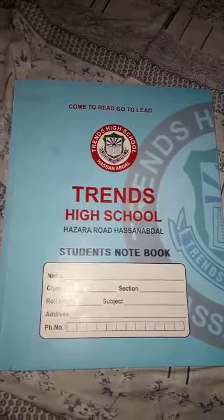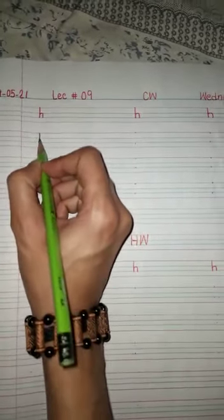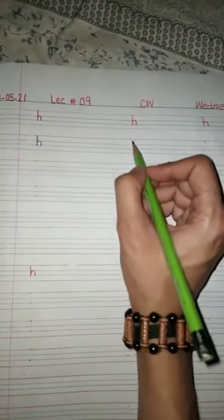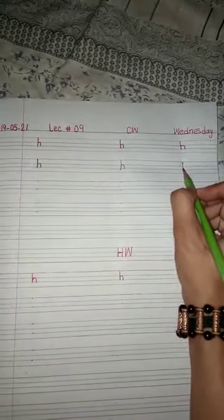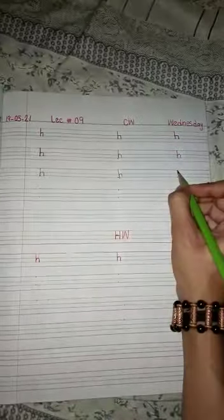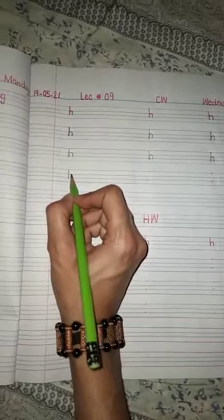Okay students, now open your English notebook. Aaj ki lecture mein hum H likhenge — alphabet H write karenge. To chaliye, mere saath write karna start karenge. H — it's one straight line, and then an arch.